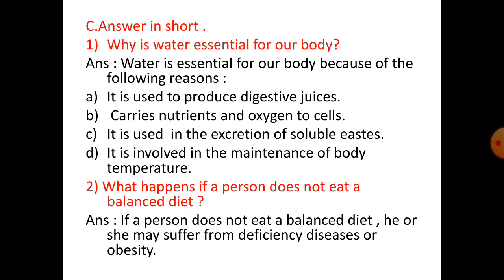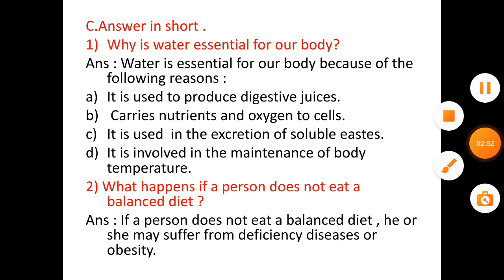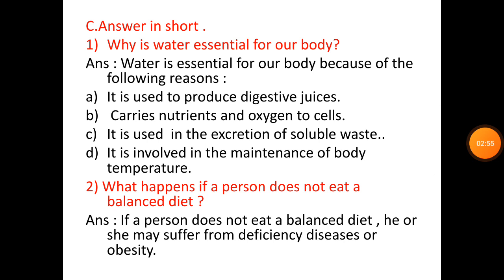Next, answer in short. One — why is water essential for our body? Water is essential for our body because of the following reasons: it is used to produce digestive juices, carries nutrients and oxygen to cells, is used in the excretion of soluble waste, and is involved in the maintenance of body temperature.